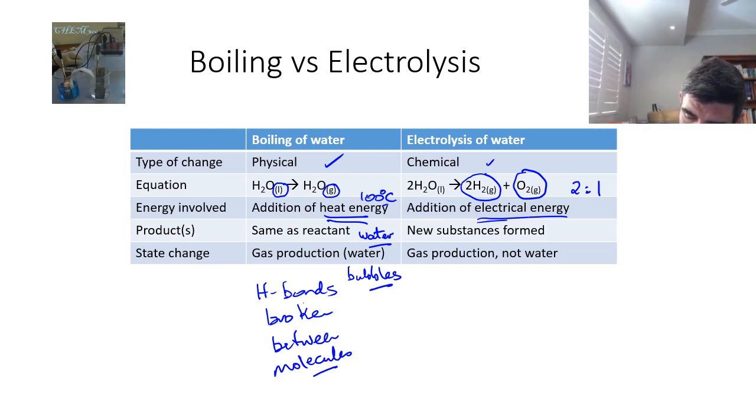This requires electrical energy, which is a higher input of energy than is required in the heat change of state of water. Two new substances in this case are formed hydrogen and oxygen. And we can test for these gases in order to ensure that they are hydrogen and oxygen and not just water that's been turned into a gas.